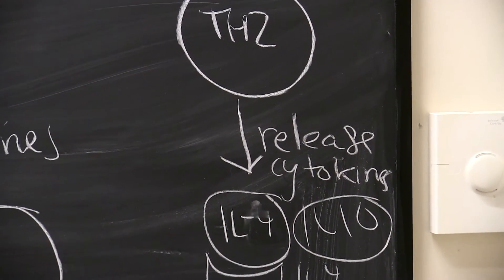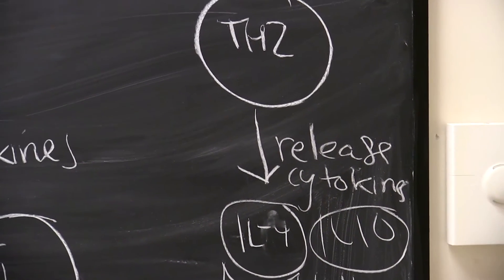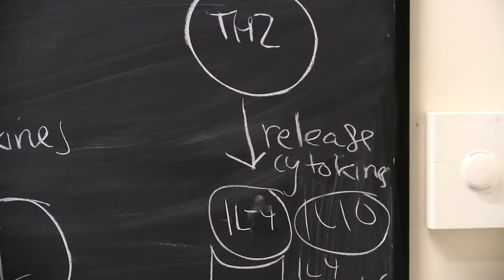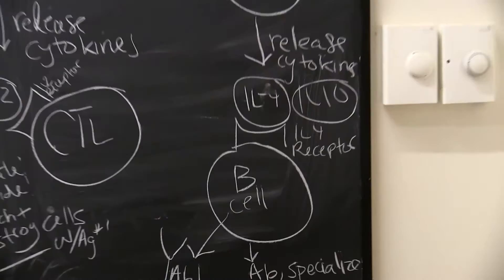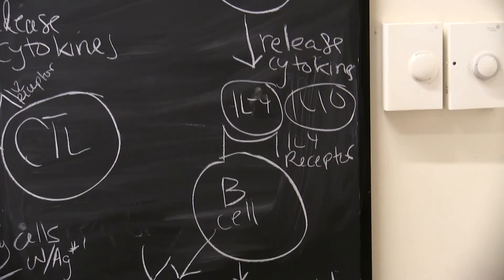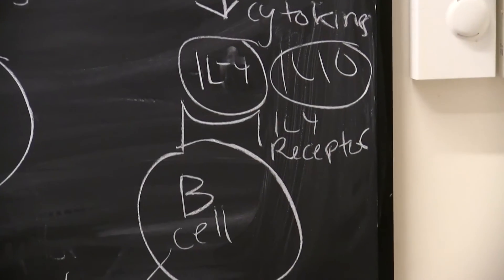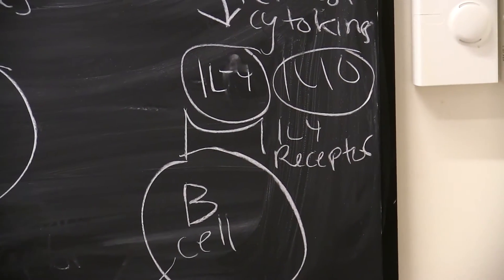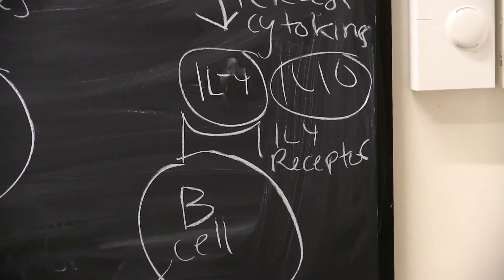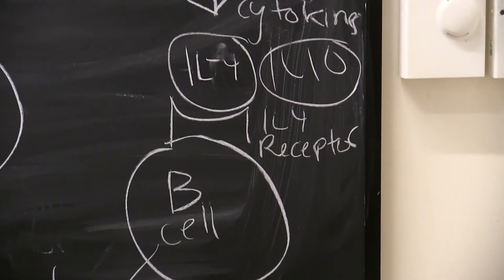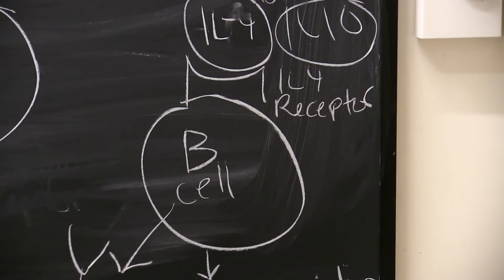After release of the cytokines, we have our B-cell here. The B-cell also has a cytokine receptor on it. This time we have the cytokine receptor for IL-4, so the IL-4 specific receptor. We can see here that our signal IL-4 binds to the B-cell, and it's this binding of the cytokine to the B-cell that activates the B-cell.